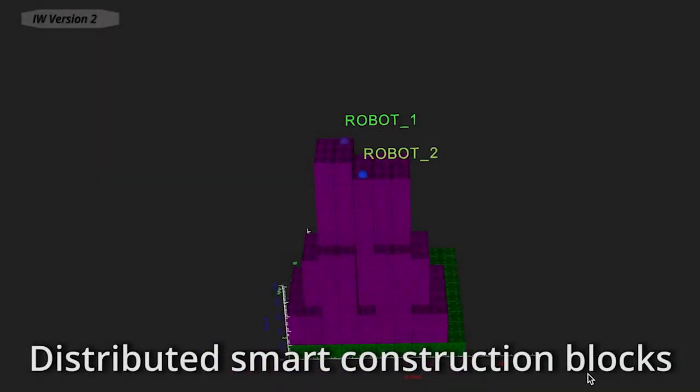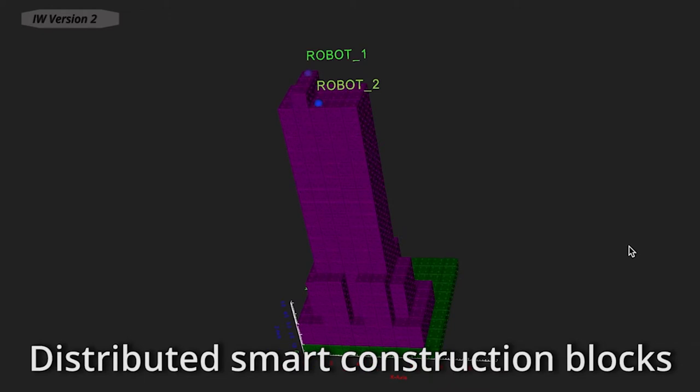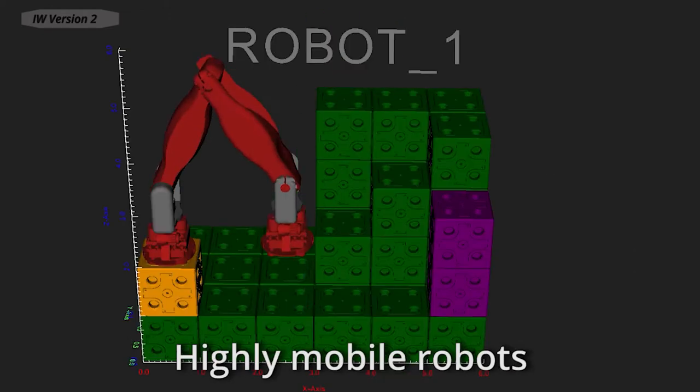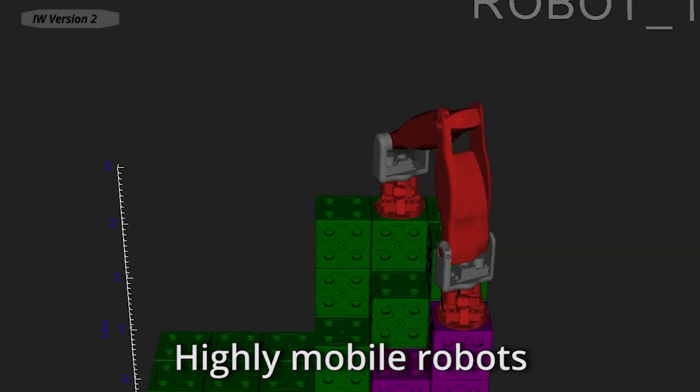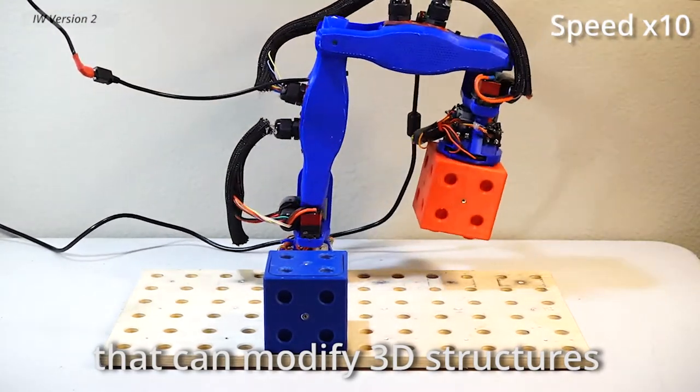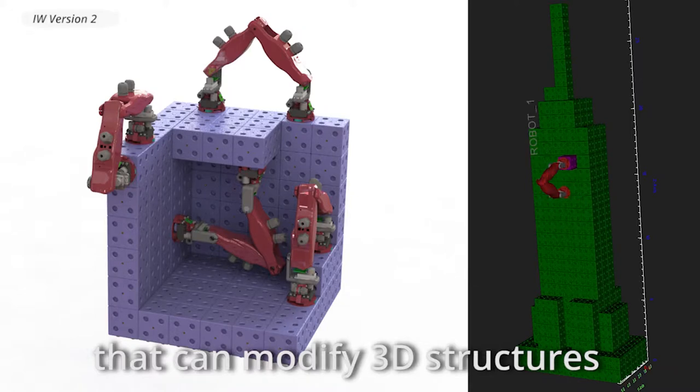This work is the first to combine a collection of communicating smart construction blocks behaving as a form of growable active matter with highly mobile builder robots designed to navigate and modify a 3D structure to perform collaborative construction.